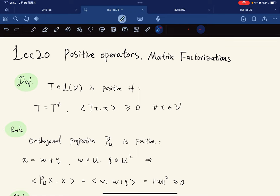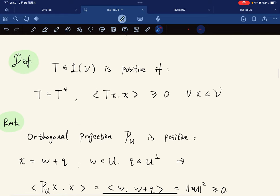Okay, so for this lecture we're going to talk about positive operators and some matrix factorizations. We start with the definition of a positive operator: it is self-adjoint and <Tx, x> is non-negative for any x.